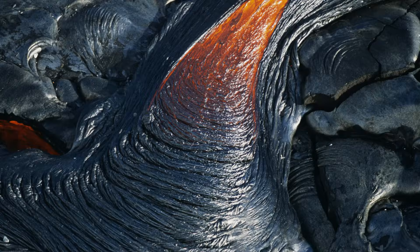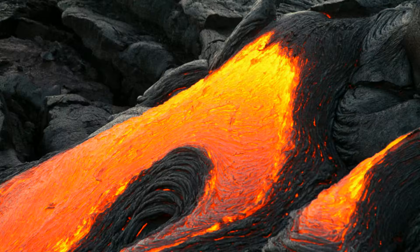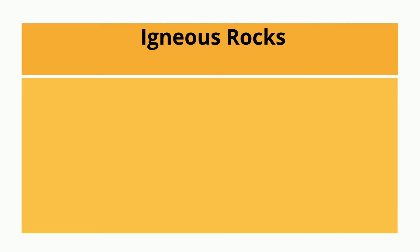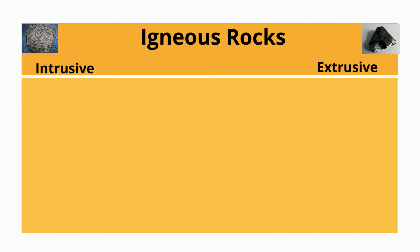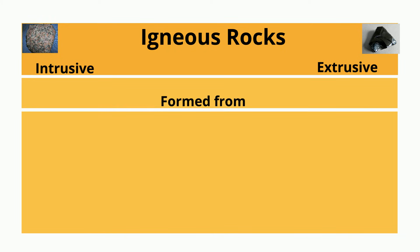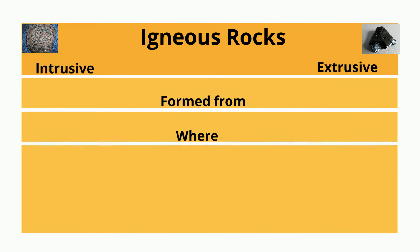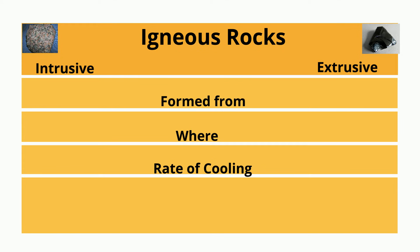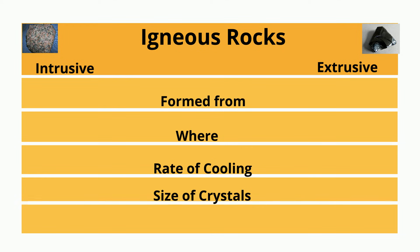There are two major types of igneous rocks: intrusive and extrusive. Let's take a look at how intrusive and extrusive rocks differ in terms of what they form from, where they are created, the rate of cooling, the size of crystals, and the texture.